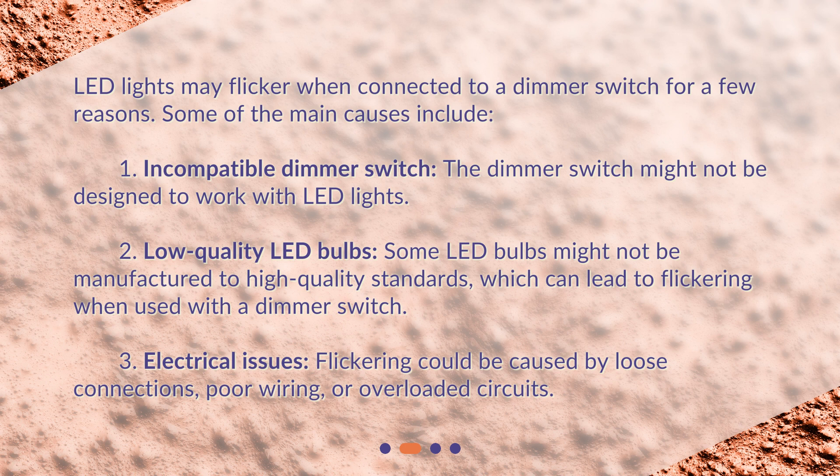2. Low-quality LED bulbs — some LED bulbs might not be manufactured to high-quality standards, which can lead to flickering when used with a dimmer switch. 3. Electrical issues — flickering could be caused by loose connections, poor wiring, or overloaded circuits.